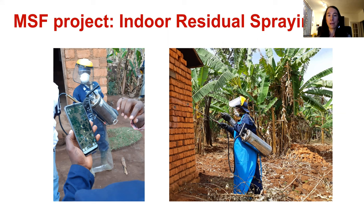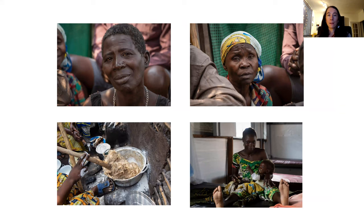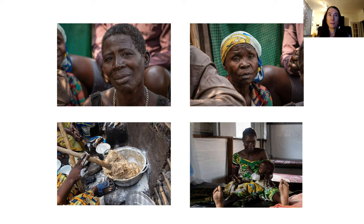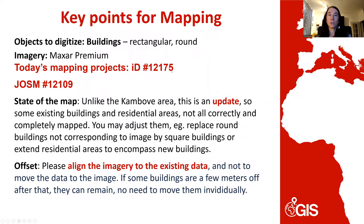I wanted to show you a few of the people we are helping. These photos are from the Angumu area. This is a mother whose baby has been treated in one of our clinics, I think for malaria. You can see they are really modest people who have very little. This is one of the typical meals — essentially just corn flour and water, and maybe a bit of salt.